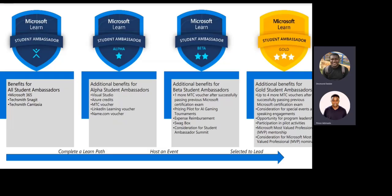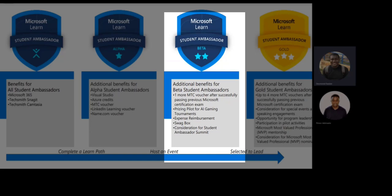After completing a technical onboarding session and hosting an event, you are moved to the next milestone: Beta. Benefits of being a Beta Student Ambassador include an additional Microsoft Technical Education Voucher, prizes for an AI gaming tournament, expense reimbursement for summits, and your official first Swagbox from Microsoft.